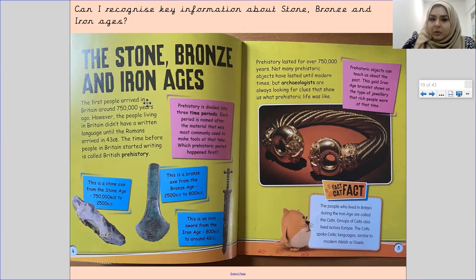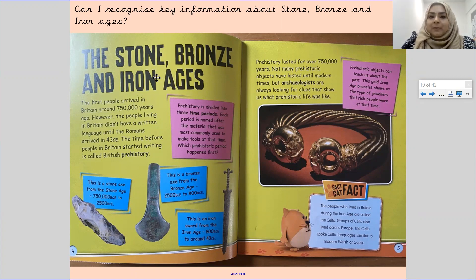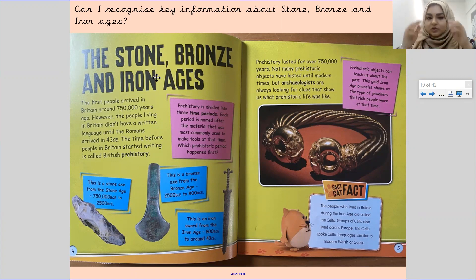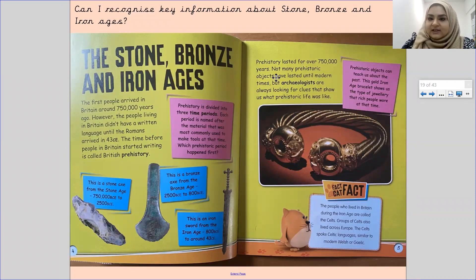When we did our wider curriculum lesson and your text map, it says 500,000 years ago, and in this book it says 750,000 years ago. But that doesn't matter because it was prehistory — they're kind of unsure about when as well. There will be some sources which will give you different years of when they believe people came. So prehistory lasted over 750,000 years and not many prehistoric objects have lasted until modern times.